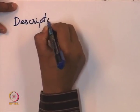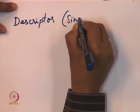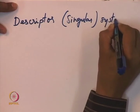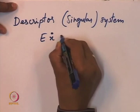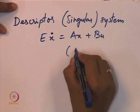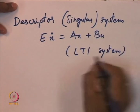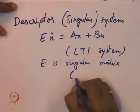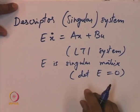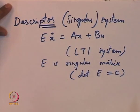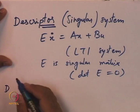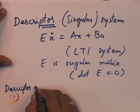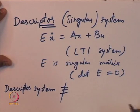The Describing Function method is not to be confused with another word. There is also something called a descriptor, which is also called a singular system. This is a linear system — we have all seen state space LTI systems. This is an LTI system in which E is singular, meaning determinant of E is equal to zero. This is a descriptor system. The descriptor system is not the same as describing function.